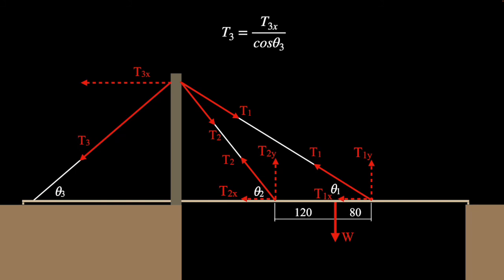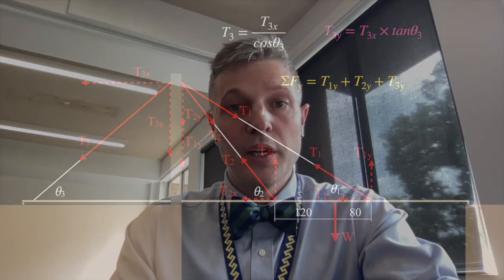What I do want to do now is find the compression going through that pylon. So to do that, I need to know what components of those tensions, all the components that are in the y, which are going to be pulling downwards. So I need to find the y component of T3 using that little trig there, and I'm going to add that to the other two components, which gives me a net force in y. That net force in y, T1y plus T2y plus T3y, will be equal to the compression force acting on the pylon.